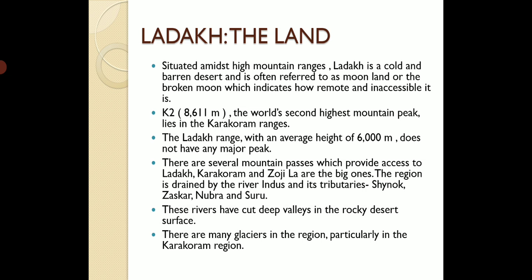There are many mountain passes which provide access to Ladakh. The Karakoram range and Jojila Pass are very important and famous passes. This region is drained by the river Indus and its tributaries — Shogs, Zaskar, Nibra, and Suru. These rivers have deep-cut valleys and a rocky desert surface. You will find many ice glaciers in this region, mostly in the Karakoram mountain range.